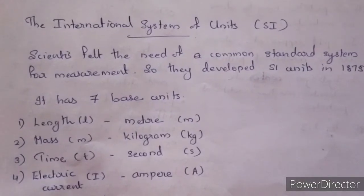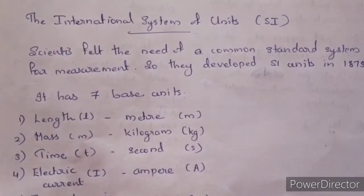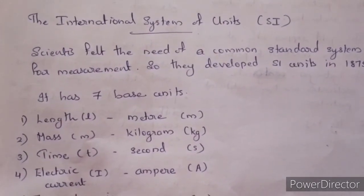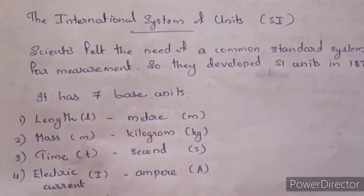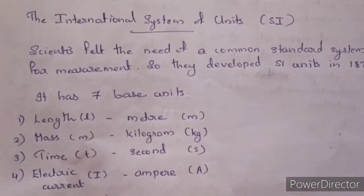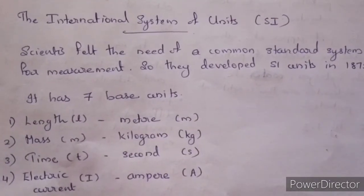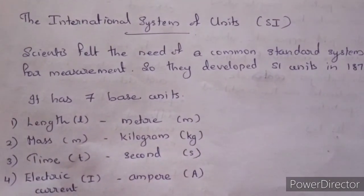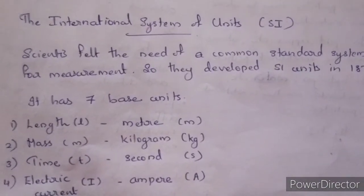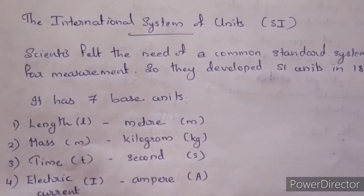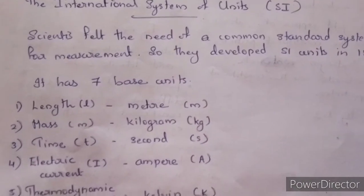Physical properties can be measured using different types of units — English units, the English system, and the metric system. Later, scientists felt the need of a common standard system for measurement, and so in 1875, the SI unit — the International System of Units — was developed.